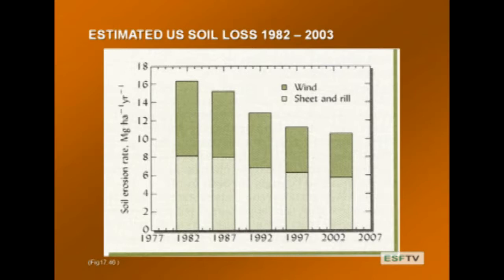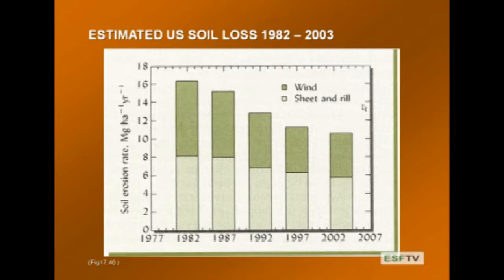Looking at the big picture for the U.S.: data from the text shows estimated soil loss from 1982 to 2003. Plotting soil erosion rate in megagrams per hectare per year from 1977 to 2003, there has been a successive reduction in combined wind and water erosion — mostly sheet and rill. This suggests that USDA efforts and national programs to reduce erosion and apply best management practices are effective. These data are encouraging and show that our efforts are paying off.